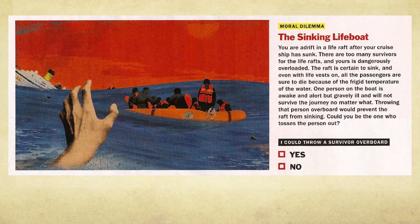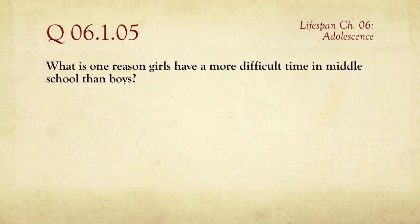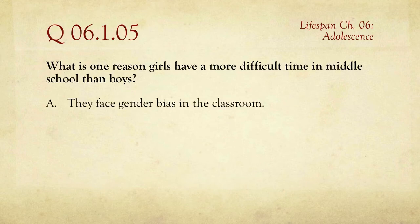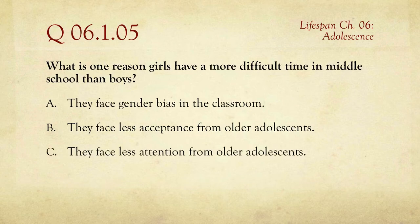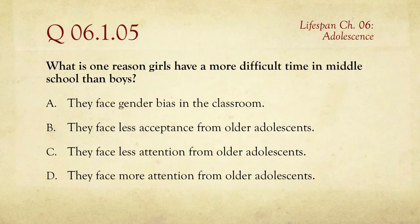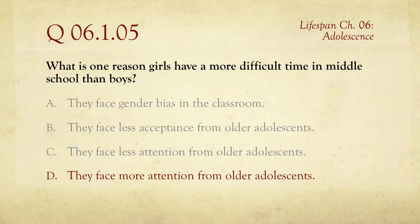That's an interesting question — it actually makes me think about Life of Pi a little bit. Question number five: which is one reason girls have a more difficult time in middle school than boys? I was not generally aware of this difference before I read this. The choices are: they face a gender bias in the classroom, they face less acceptance from older adolescents, they face less attention from older adolescents, or they face more attention from older adolescents. The answer is they face more attention from older adolescents.